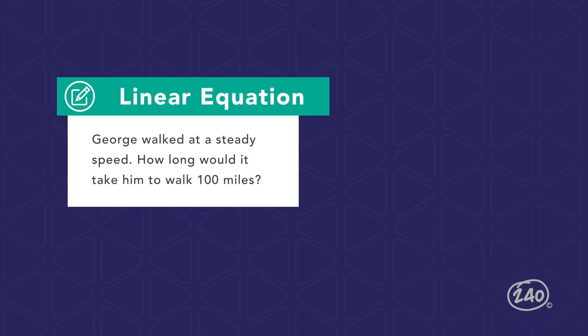The method of extending the table works well, but only if the amount you need to continue the pattern is within reason. For example, if you were asked how long it would take George to travel 100 miles, it would take a lot of time and space to continue the pattern to 100 miles in the y column. Instead, you could write an equation that represents the relationship between the hours x and the miles y, then use the equation to determine how many hours it would take George to travel 100 miles.